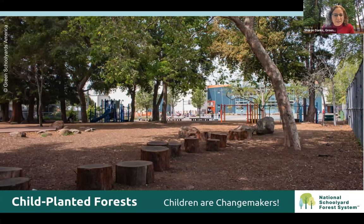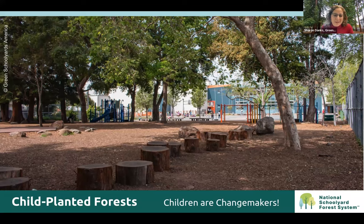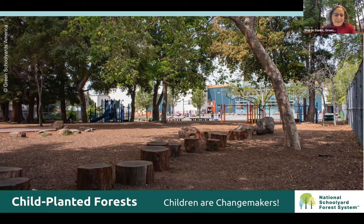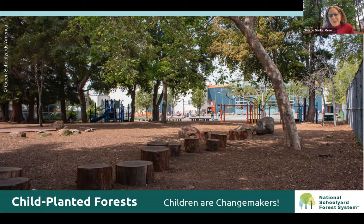This image is a shout-out to Robin Moore, who's in the audience today. It was designed by Robin and the school community in Berkeley at Washington Elementary — a 50-year-old child-planted forest designed and built in the seventies with the help of students. Some of those students have grown up to be parents of students at the school. They remembered the planting of this project. This is one of our models for what schoolyard forests should look like — a great patch, a great example. Children can be change makers.